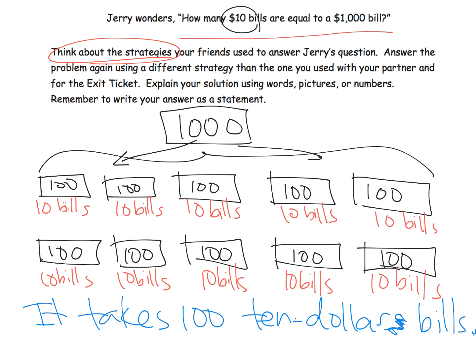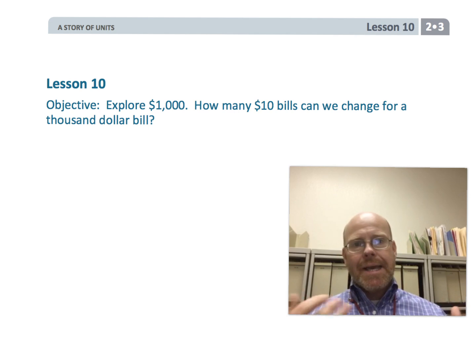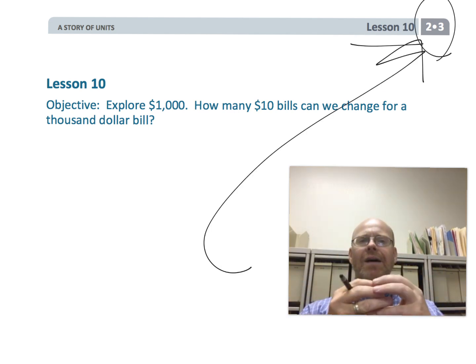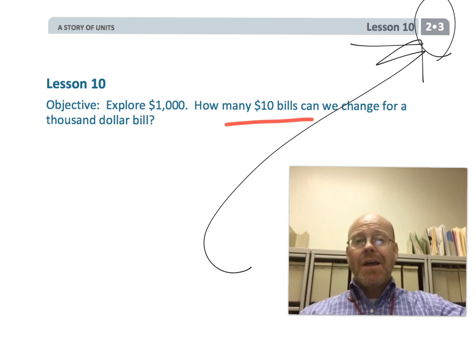Now that's just one way to do it. There are a lot of other ways that students can organize their thinking and their strategies. Parents and teachers, our job is to celebrate all of them as long as they're correct. At this point, we're not looking for the most efficient or the fastest way — we're just looking for a strategy that demonstrates their thinking. And so that wraps up second grade, Module 3, Lesson 10. The point of this lesson was to allow students to be mathematicians and demonstrate their own thinking and strategies for figuring out how many $10 bills it takes to make $1,000.